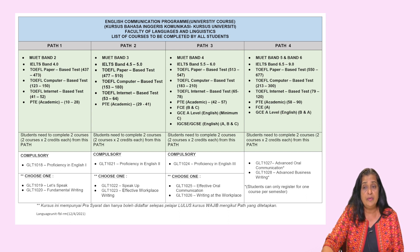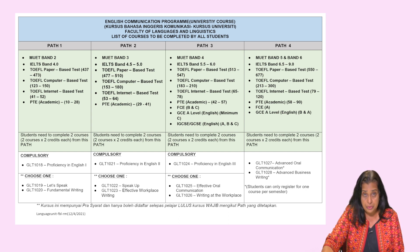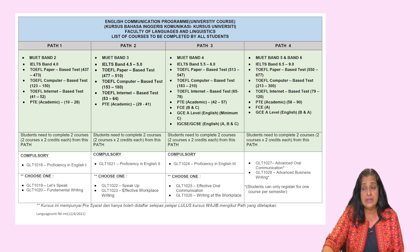For example, if you have a MUED band 3, then you must complete the courses listed in PATH 2. First, you must complete the prerequisite, that is GLT 1021, Proficiency in English 2. As you can see in this table, it is stated as compulsory. You have to achieve a minimum of grade C to enable you to advance.